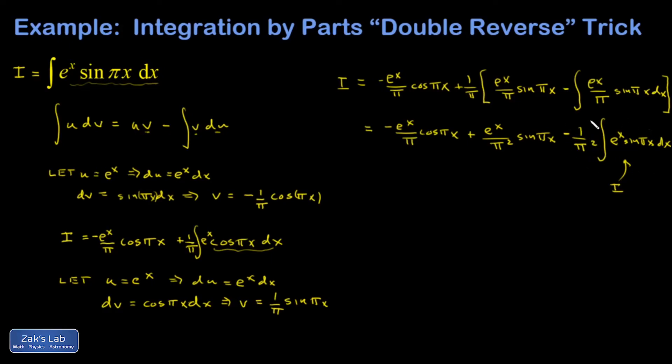If I then take this entire term with the integral in it and add it to the left-hand side, I'm going to end up with I plus 1 over π² times I is equal to negative e^x over π cosine πx plus e^x over π² sine πx. And I can factor the I out. I have I times (1 plus 1 over π²) is equal to that stuff on the right-hand side. And then I can solve for I.